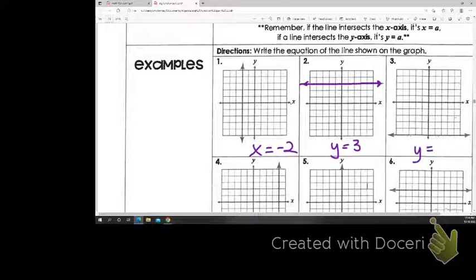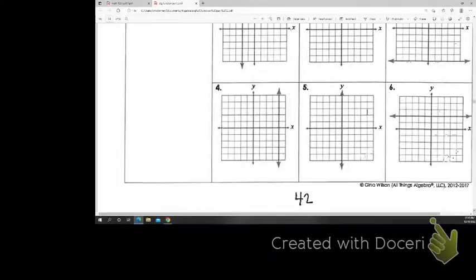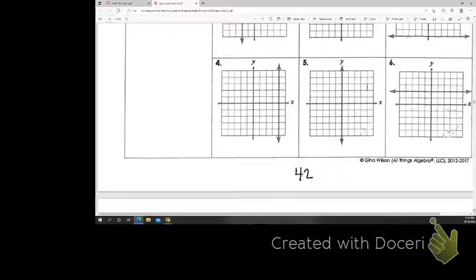And so number three, all the way down there at the bottom, Y is equal to, is that negative 5? 2, 3, 4, 5, yes. Sorry. So then number four, we would have X is equal to 4.